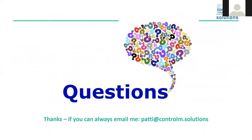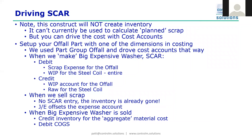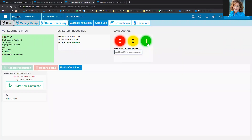Another question: when you report production on a negative bill of materials, does it create inventory? No, it cannot create inventory. If you want to create scrap inventory, you should use companion parts. This does not create inventory at all — even when you report on the control panel it will not create inventory. In control panel, when I go to record production, the only source I loaded was my steel coil. So this construct, the way we have it set up, is for costing only — it does not create scrap inventory.